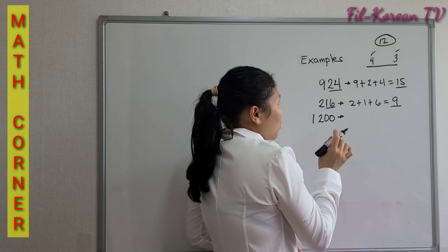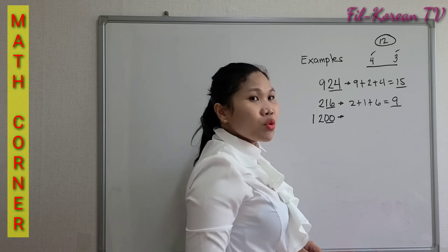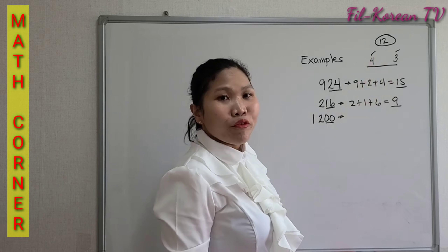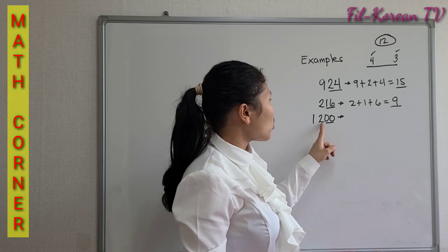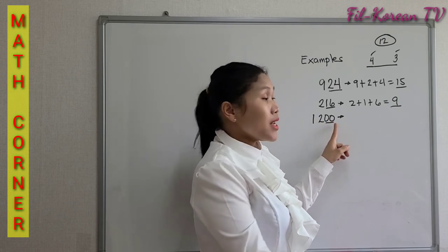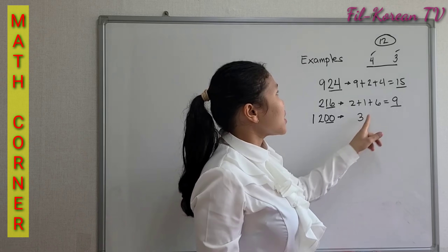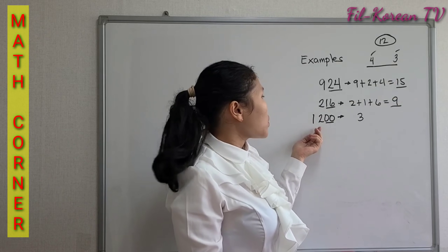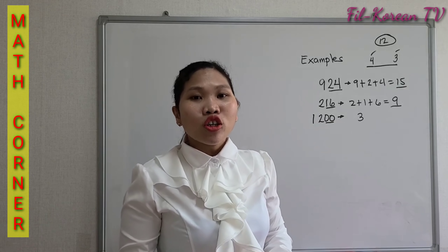Another example: 1,200. 1,200 ends in two zeros, so it is divisible by 4. If we add the digits, 1 plus 2 plus 0 plus 0 equals 3, and 3 is a multiple of 3. So, 1,200 is divisible by 12.